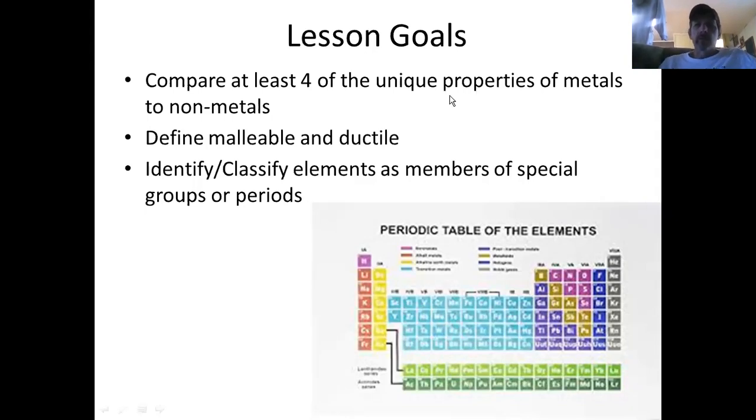So first thing, we'll take a look at what are some of the unique properties that differentiate metals from nonmetals. The second thing, a couple of key terms, the terms malleable and ductile tend not to be everyday words. So I want to make certain that we briefly describe what they mean. And then we'll take a look at a number of these special groups or periods of elements. You're going to see some color coding on this periodic table on this slide that sort of begins to highlight that. But this lesson will eventually get to that.